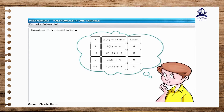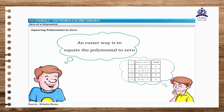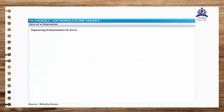As you can see, the trial and error method can often be long and tedious. An easier way to determine the zero of a polynomial is by using the other method — equating the polynomial to 0. In this method, you can find the zero of the polynomial p of x equal to 2x plus 4, by taking x as the subject.